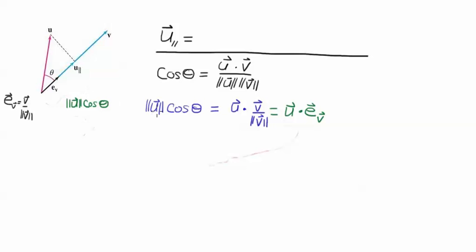So I have now two ways to express the length of the side of that triangle. It's the magnitude of u times the cosine of theta, which is equal to the dot product u dotted with the unit vector in the v direction.